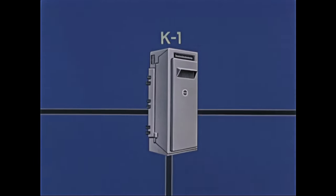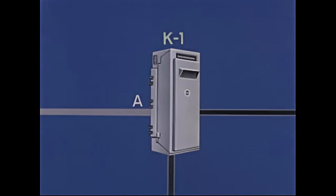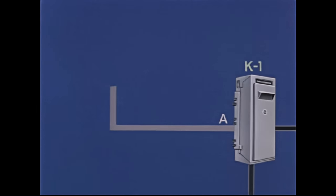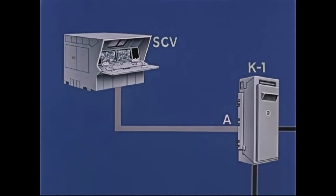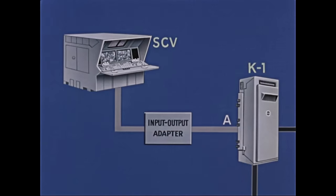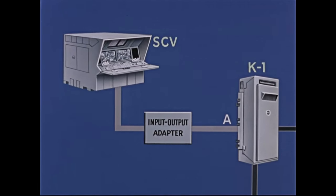Each K-1 has three input-output channels designated A, B, and C. Channel A handles data to and from the stereometric comparison viewer, or SCV, through the input-output adapter. This adapter is simply a hookup that makes the K-1 and the SCV electrically compatible, as they are manufactured by different companies.